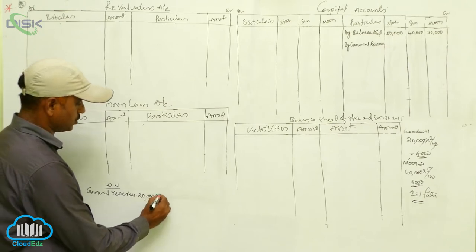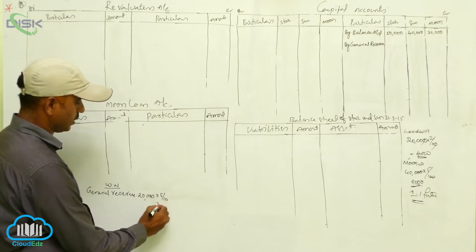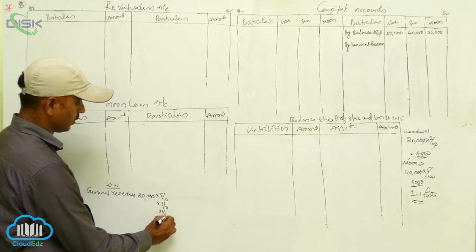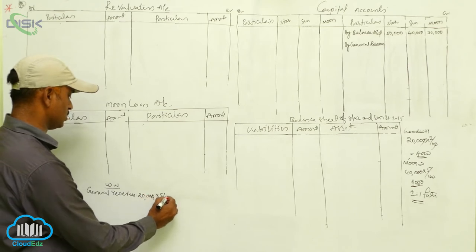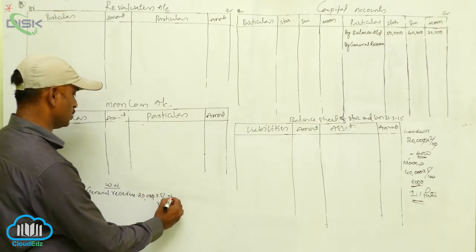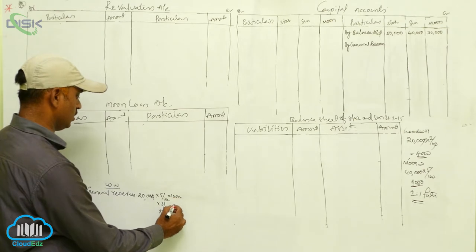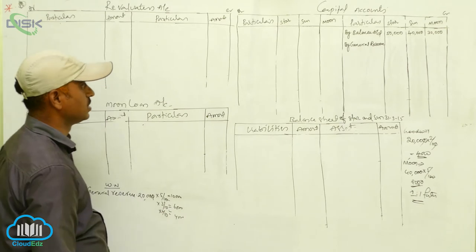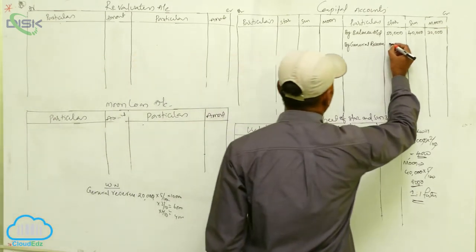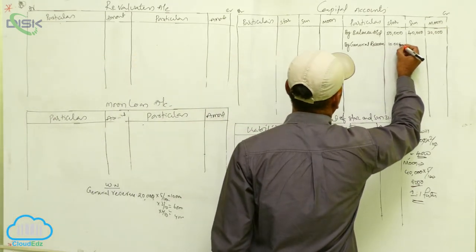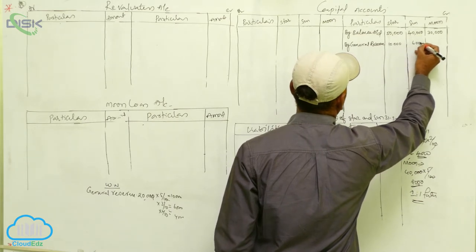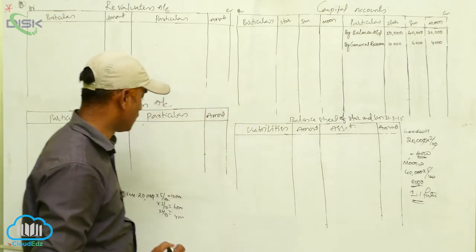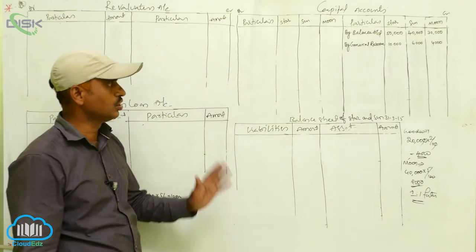The profit-sharing ratio is 5:3:2, meaning 5/10, 3/10, and 2/10. General reserve of ₹20,000 is distributed: 5/10 × ₹20,000 = ₹10,000 for Star; 3/10 × ₹20,000 = ₹6,000 for Sun; 2/10 × ₹20,000 = ₹4,000 for Moon.